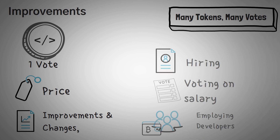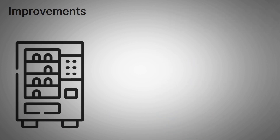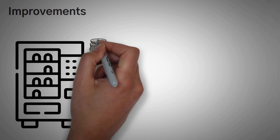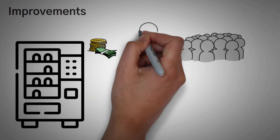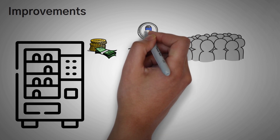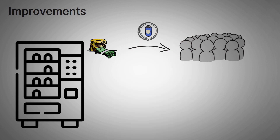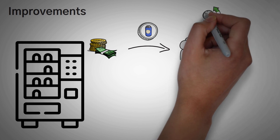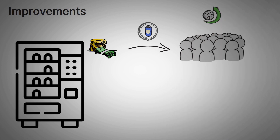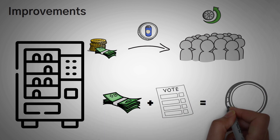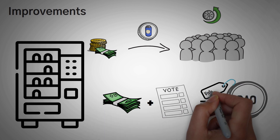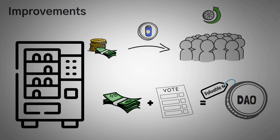The DAO would then pay employed developers with cryptocurrency. In the case of a vending machine, if that vending machine made any profits, it would redistribute all of those profits to the shareholders through its native DAO token. Any token holder would get an increase in value if the vending machine DAO made a profit. So this potential profit, along with voting rights, makes holding a DAO token much more valuable than any other useless token you might see on the subreddit Crypto Moonshots.